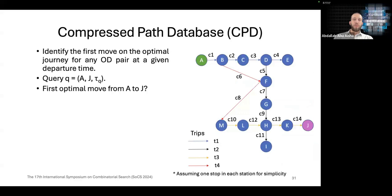The second step is the offline pre-processing. Our pre-processing is inspired by the compressed path database, CPD. What CPD does is to identify the first move on the optimal path or journey for any OD pair in the network. In this case also in public transport network we have the departure time constraint. Now consider a query from A to J at some departure time. CPD will answer the question what is the first optimal move from A to J? In this case it's by taking connection C1 from A to B. And then we ask the question recursively. Now what is the first optimal move from B to J? The answer is connection C2, and so on. We continue until we reach the destination J. In this case we need eight lookups.